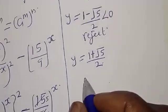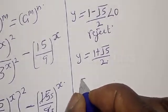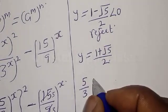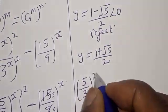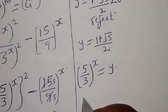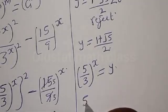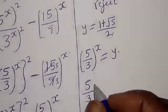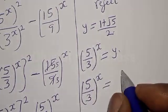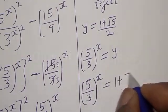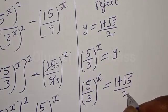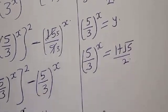The real solution is y is equal to 1 plus square root of 5 divided by 2. And remember that we said 5 divided by 3 raised to power s is equal to y. So we have 5 divided by 3 raised to power s is equal to 1 plus square root of 5 divided by 2.